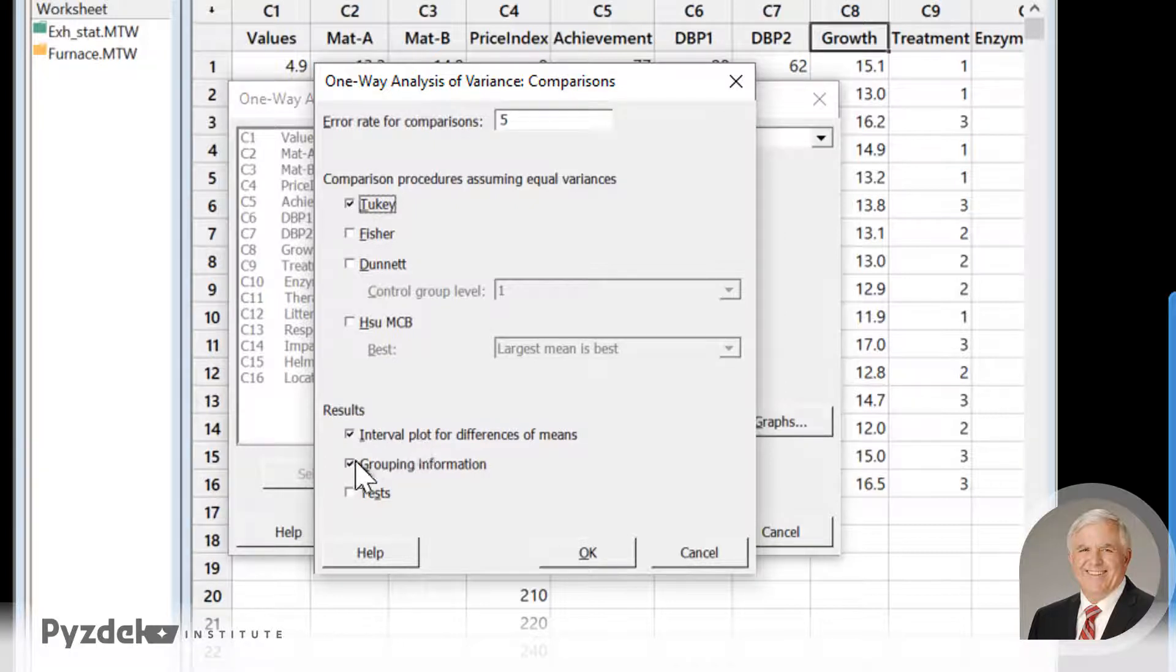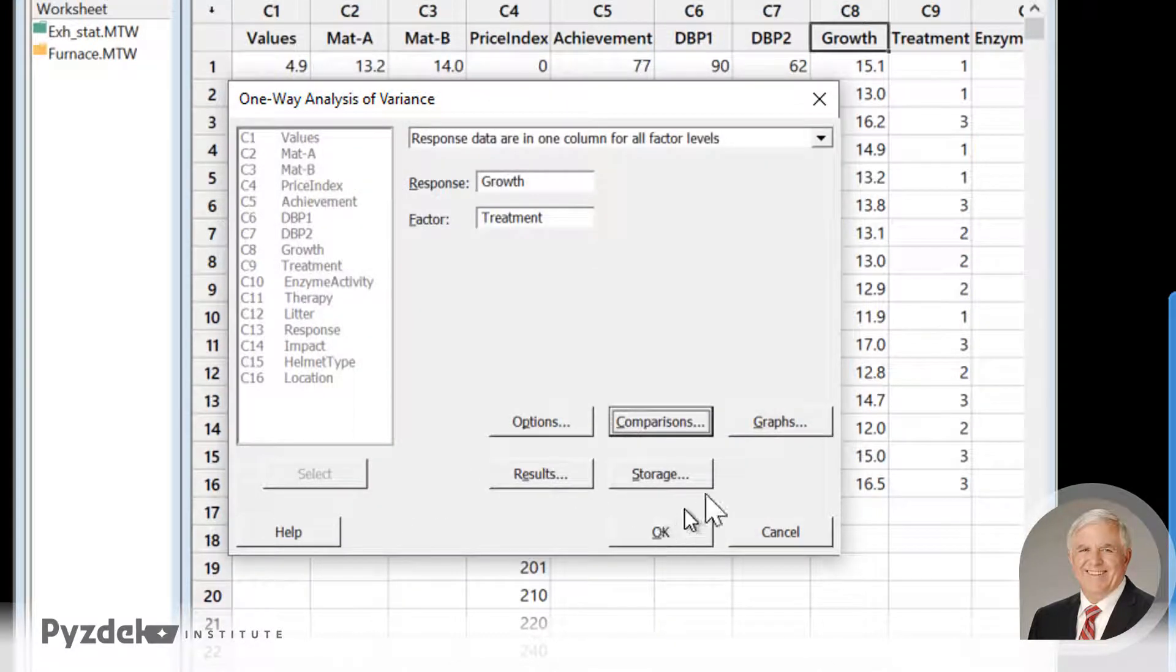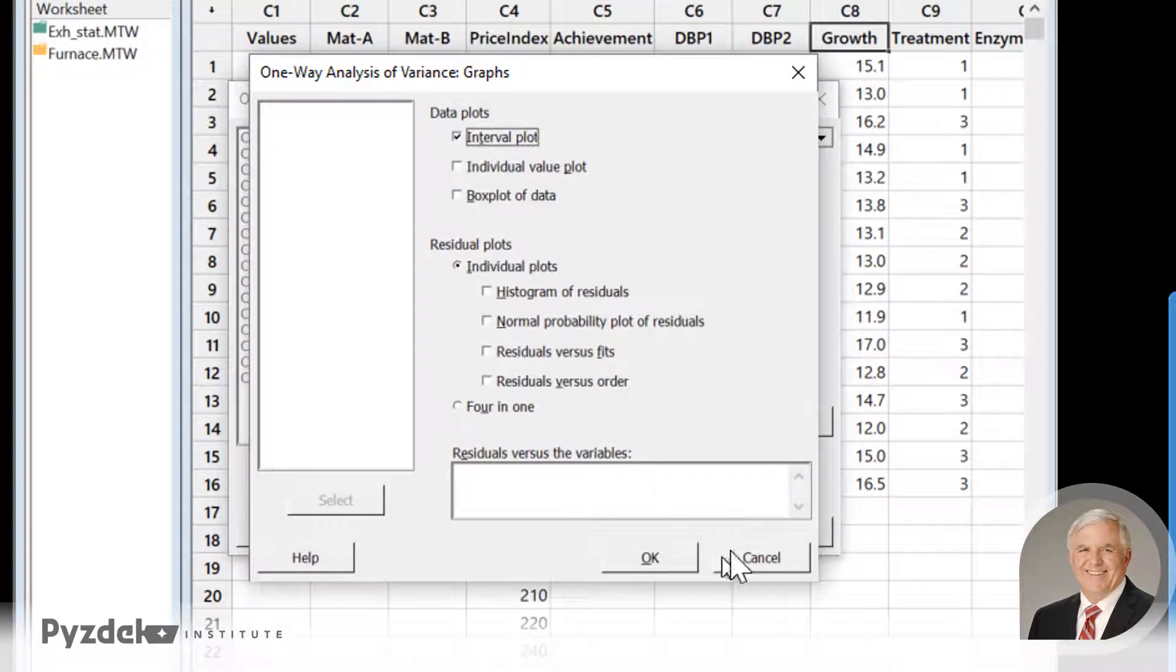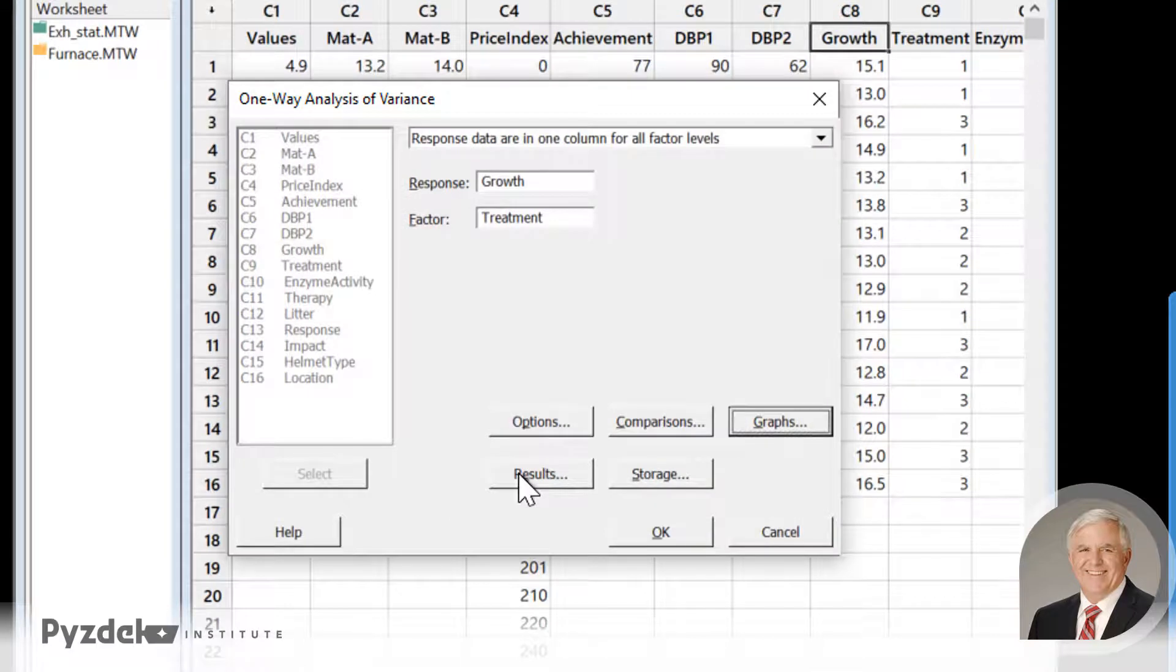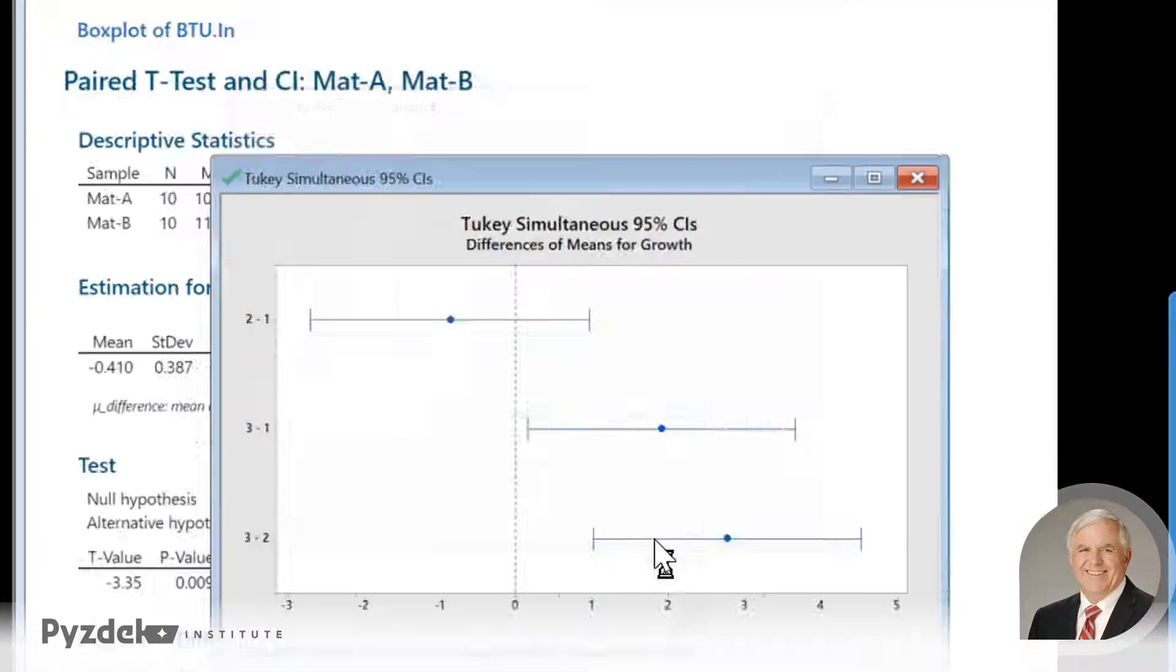We'll look at an interval plot and grouping information. This is going to give us some pictures that we can use to help make sense of the data, and we'll click OK. We also have options to do different graphs of residuals. These are covered in other lessons. We'll not change those for now. We'll just do the analysis with the information that we have.